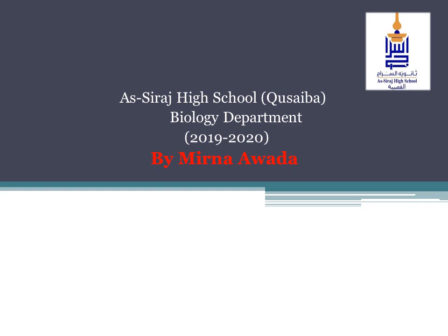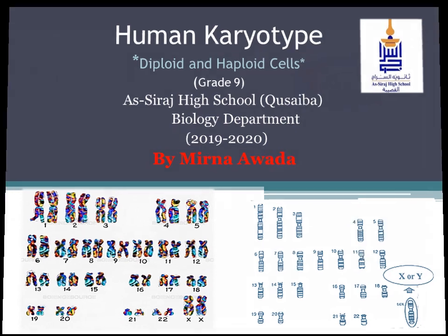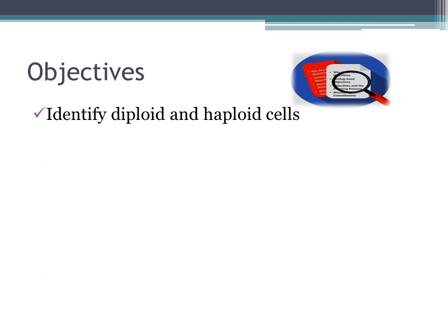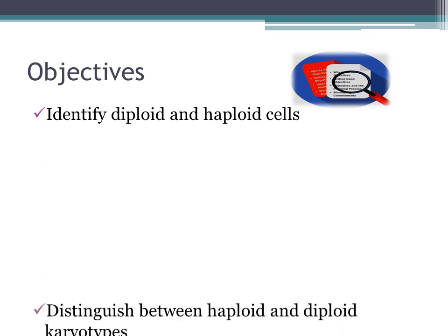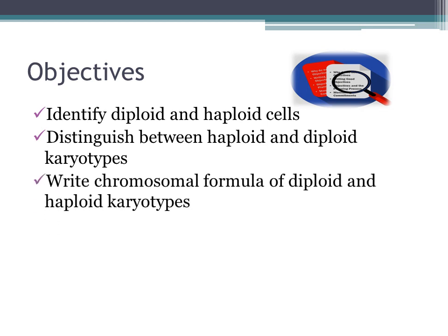Good morning or good afternoon, dear students. In this session, we will study about karyotypes of human diploid and haploid cells. The objectives of this session are to identify diploid and haploid cells, to distinguish between haploid and diploid cells in terms of karyotype, and to write the chromosomal formula of diploid and haploid karyotypes.